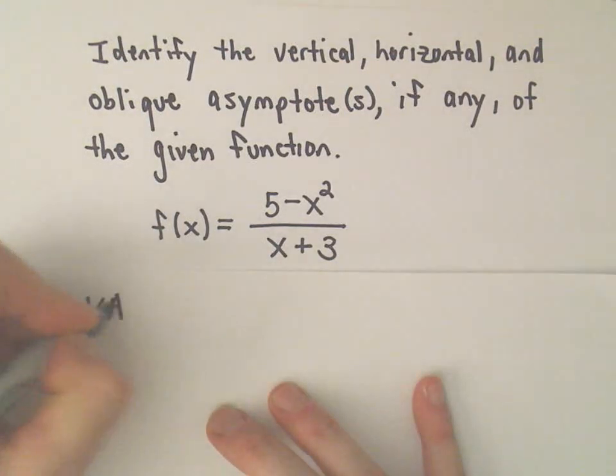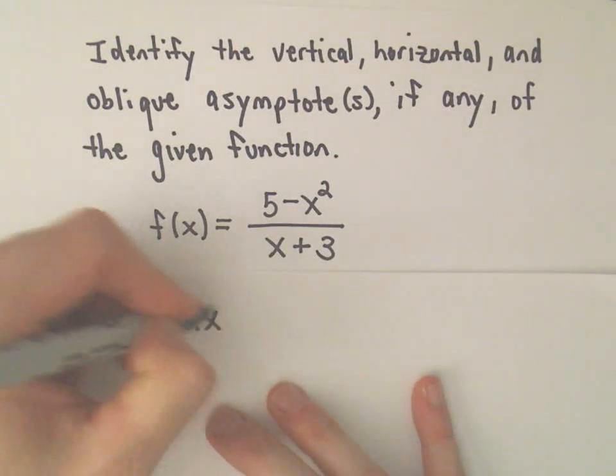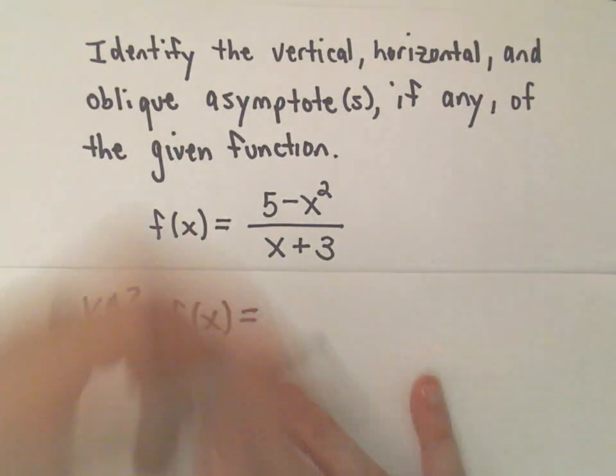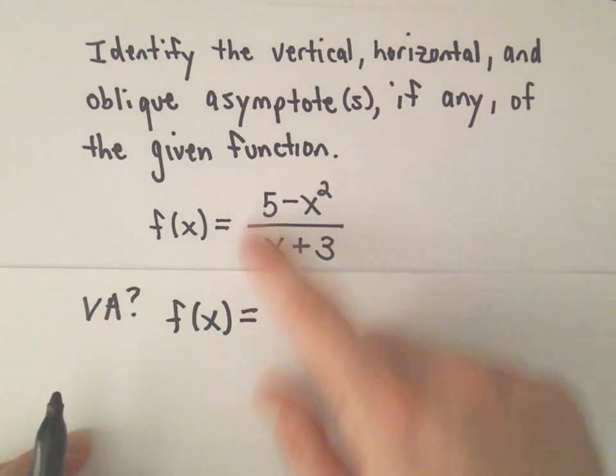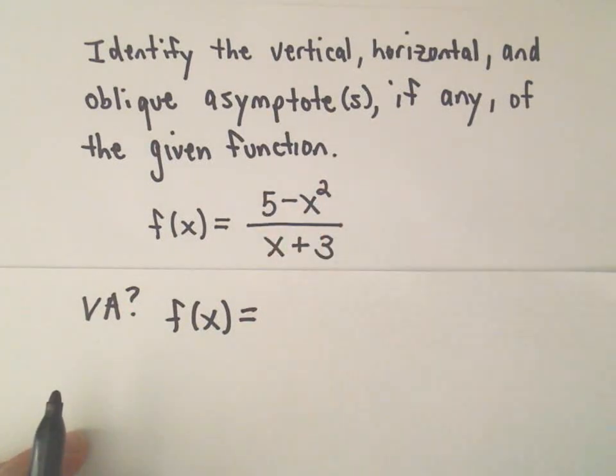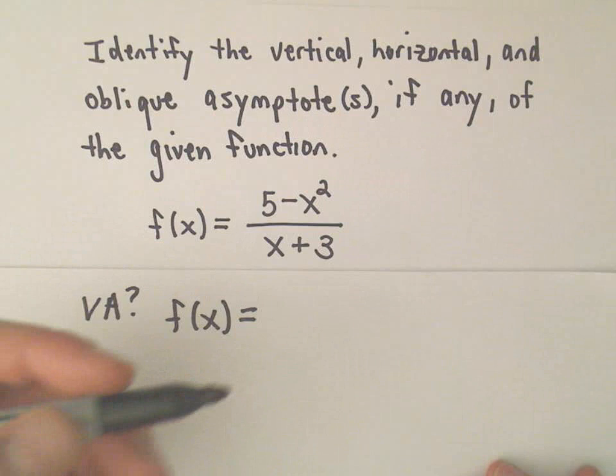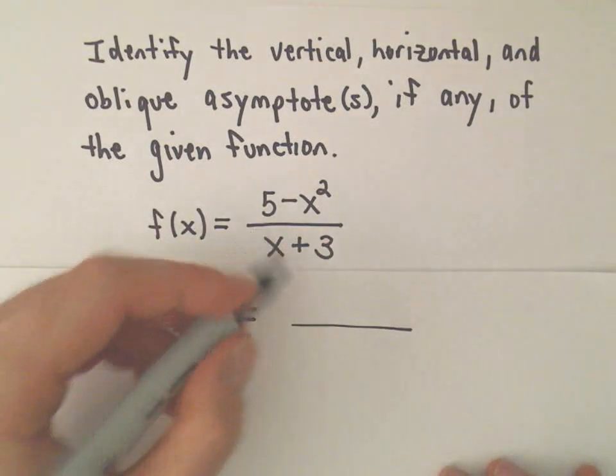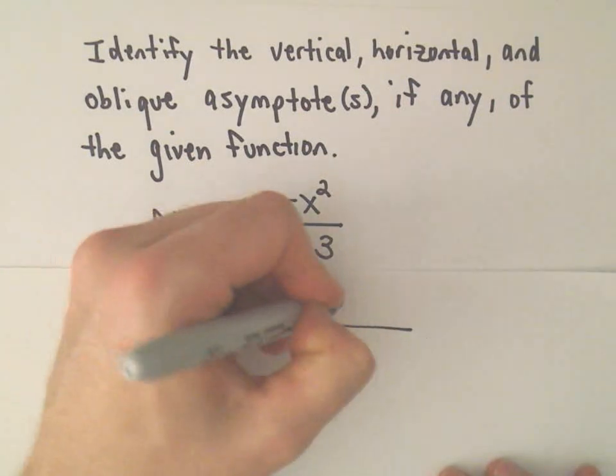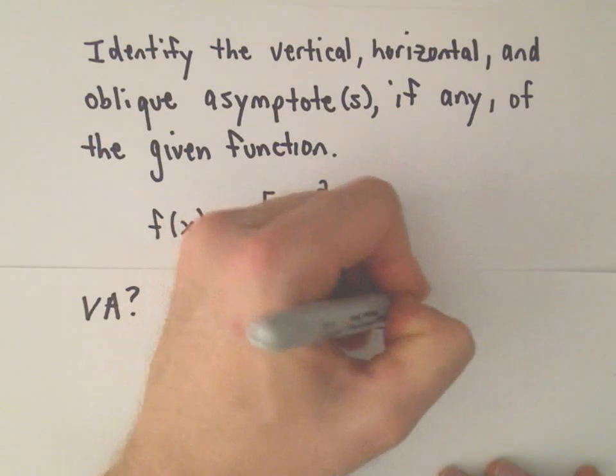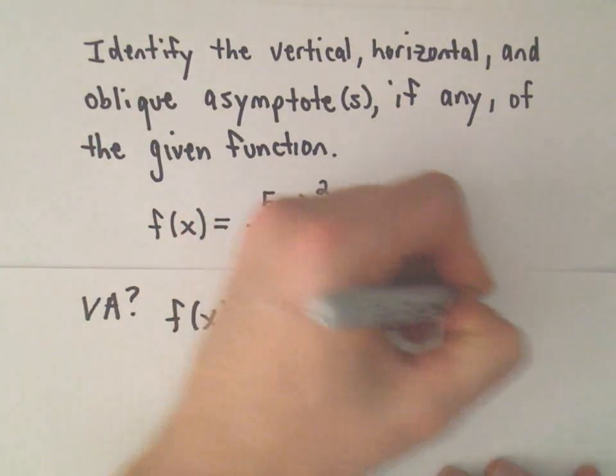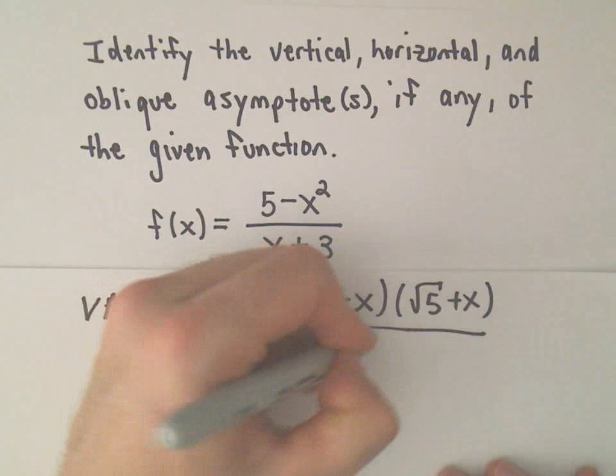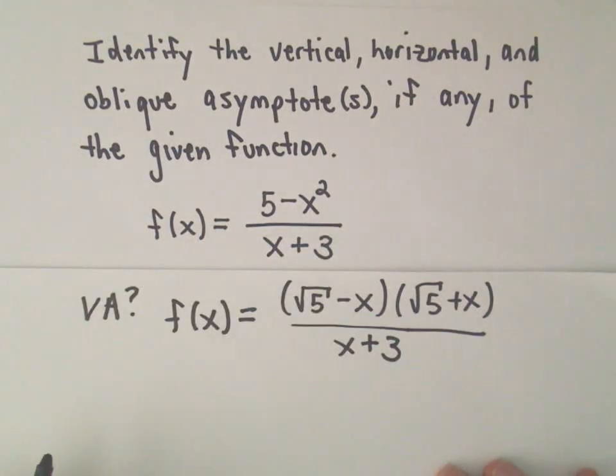So are there any vertical asymptotes? Well, what we try to do is we try to factor down our rational function and see if there are any common factors in the numerator and denominator, and if so, we cancel them. Technically the numerator does factor. It's actually a difference of perfect squares. So we can write that as the square root of 5 minus x times the square root of 5 plus x, all over x plus 3. Even if we do that, we're certainly not going to have any common factors.